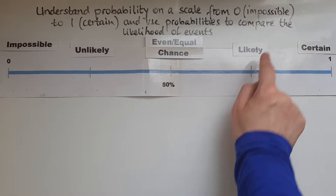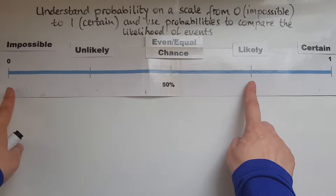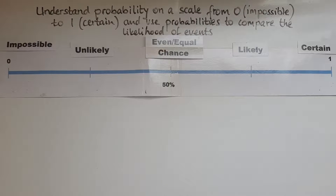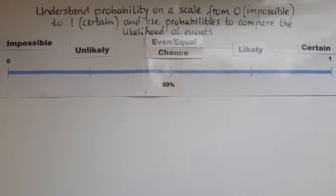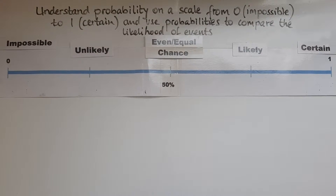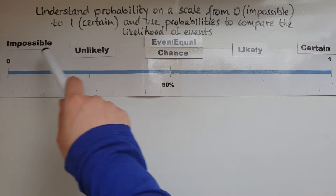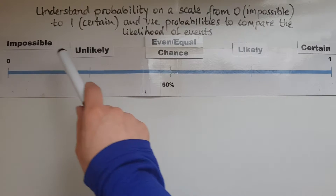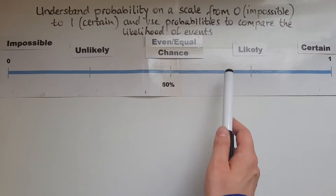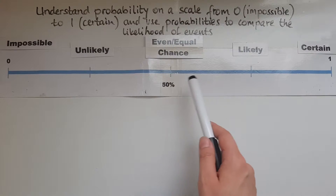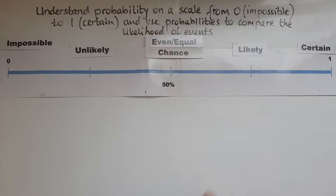Likely is when the chances are about 75 percent — most likely it will happen, but it may not. We write probability in different ways. The likelihood is expressed in words: impossible, unlikely, even or equal chance, likely, certain.